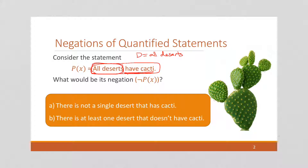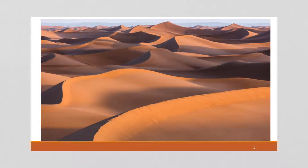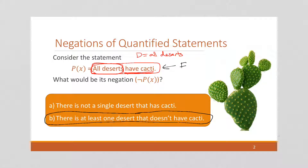We want to think about the world being broken into two parts. One that says all deserts have cacti — and what's the opposite of that? It's going to be that at least one desert does not have cacti, because we said this is a false statement. The Sahara Desert, for example, is a desert that doesn't have cacti. Antarctica is also considered a desert because desert is defined by the amount of rainfall. We know this is a false statement, but that doesn't mean there's not a single desert that has cacti — the Sonoran Desert certainly has cacti. So if the statement is false, then our negation is true.